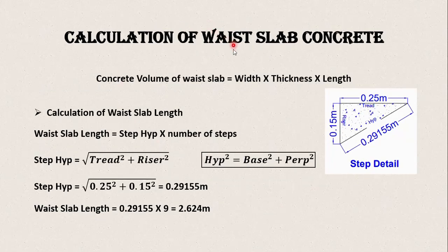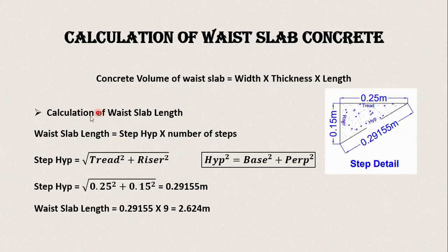Now we calculate the concrete volume for the waste slab using the formula: width × thickness × length of waste slab. The width of the stair is 1.2 meter and the thickness is 0.15 meter, but we do not yet have the length of the waste slab, so we will calculate it first.